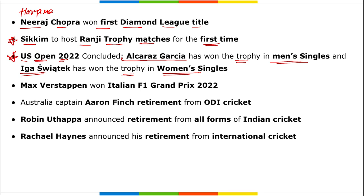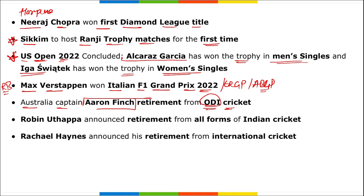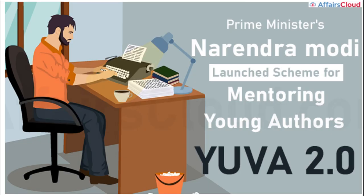The US Open is one of the four grand slams. Max Verstappen, driving for Red Bull, won the Italian F1 Grand Prix 2022; he also won the Emilia Romagna and Azerbaijan Grand Prix. Australia captain Aaron Finch retired from ODI cricket. Robin Uthappa announced retirement from all forms of Indian cricket. Rachel Heyhoe Flint announced retirement from international cricket.